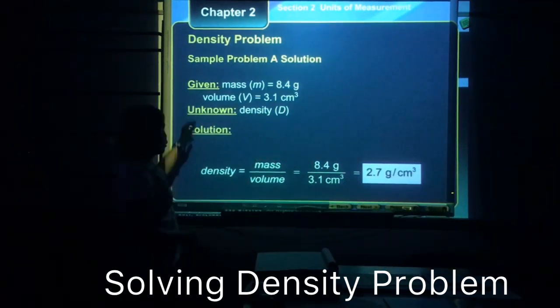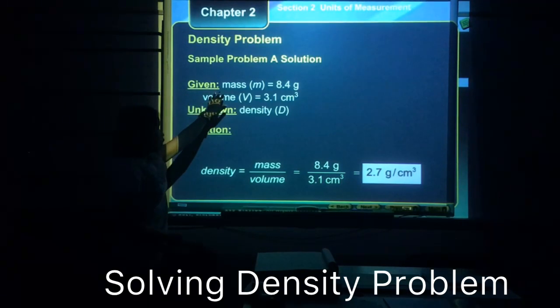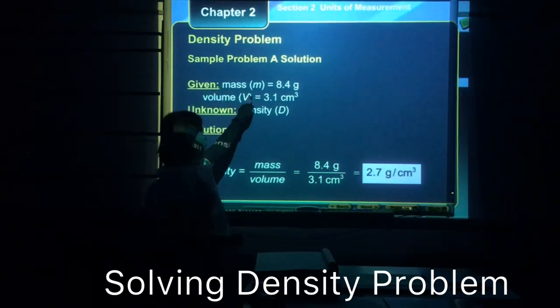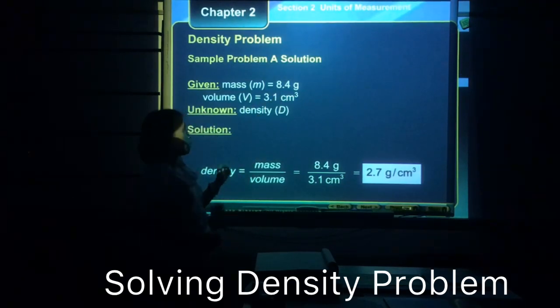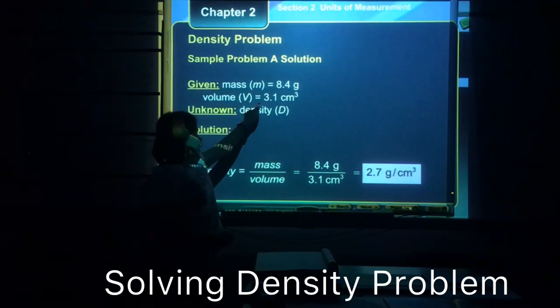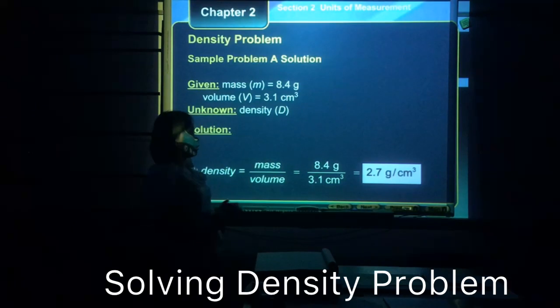So on the board you see the given which are the mass and the volume. So the mass is shortened as m and it is 8.4 grams. Volume is shortened as V, capital letter V, and it has a value of 3.1 cubic centimeters. That's always the unit of volume.